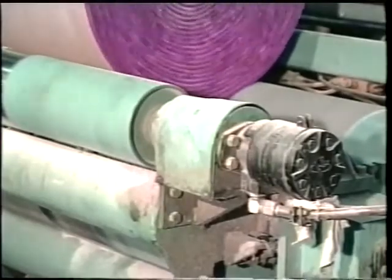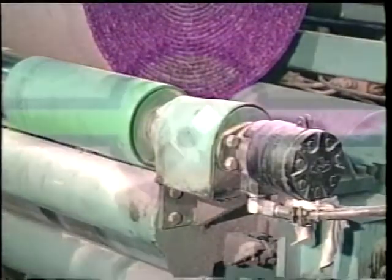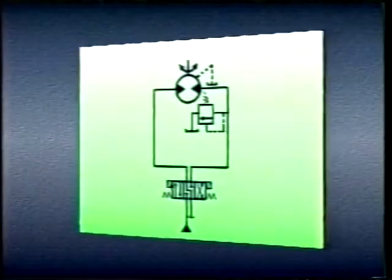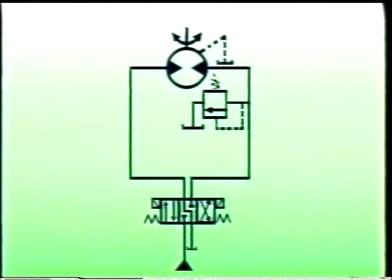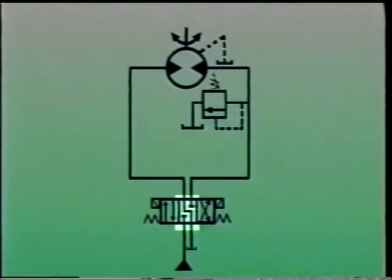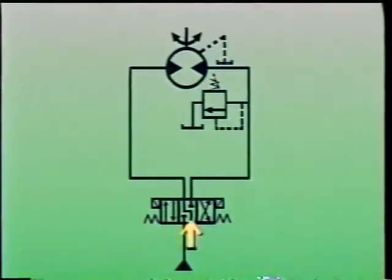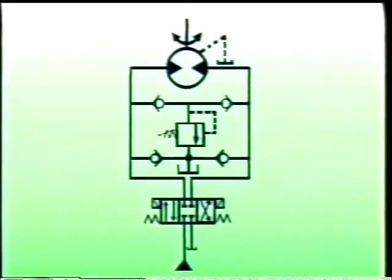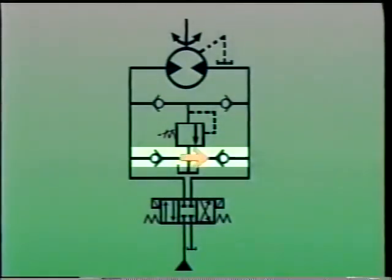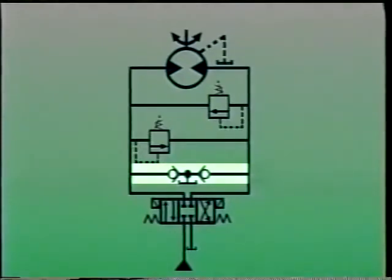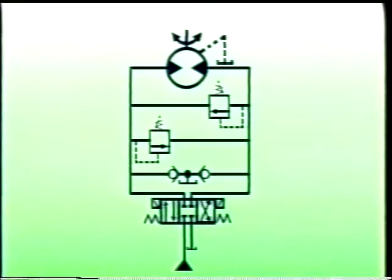Whenever hydraulic motors are braked, some method must be used to make sure fluid is available at the motor inlet, otherwise the motor will cavitate and may be damaged. Three methods are generally used. One method uses a directional control valve in which the center condition connects the motor's inlet to tank, so back pressure brakes the motor while fluid flows from tank preventing cavitation. Another common method uses make-up checks — very low pressure check valves which allow fluid to flow out of the tank and into the motor. The last method uses crossover relief valves, where one or the other discharges fluid to the motor inlet depending on which way the motor is turning; make-up checks are still required since some fluid will be lost through the motor drain and across the directional control valve.